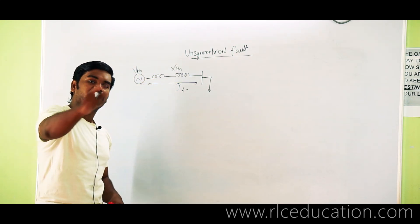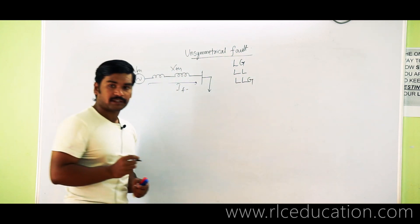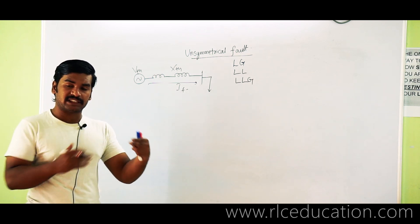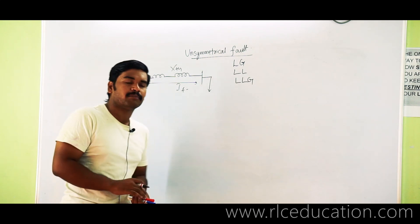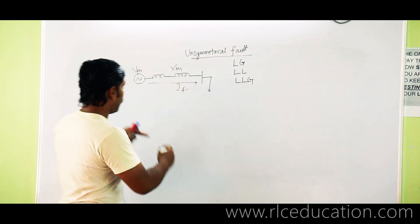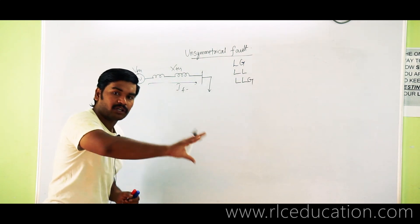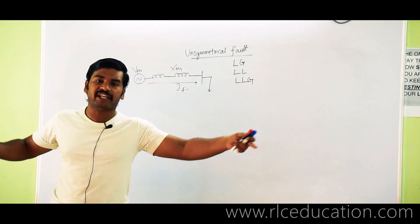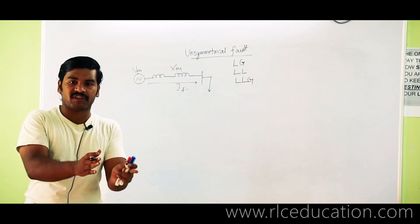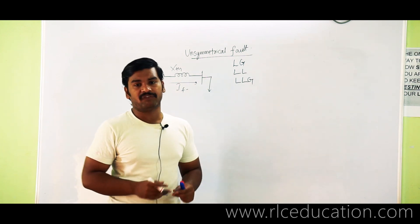In unsymmetrical faults, this condition of symmetry is disturbed. The types of unsymmetrical faults are LG fault, LL fault, LLG fault. In these cases, fault current flows in only one or two phases; the other phase has no fault current. That means symmetry is disturbed and the single-line diagram is no longer valid. We would have to take three separate reactance diagrams — one for each phase — and calculate all fault currents, which becomes very tedious.